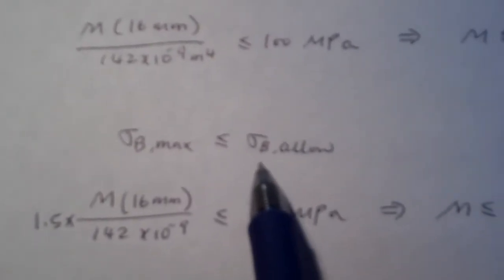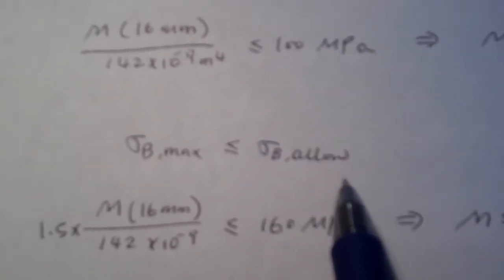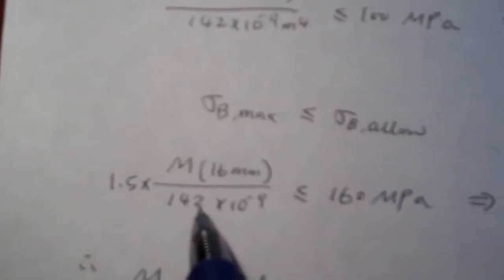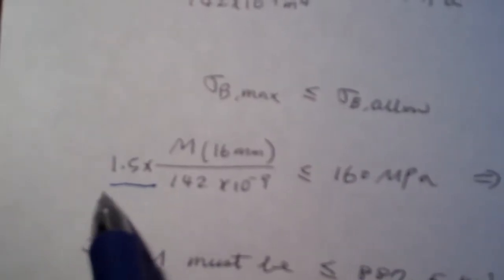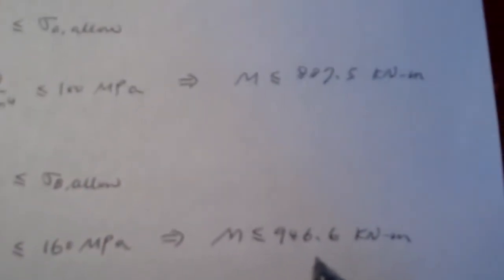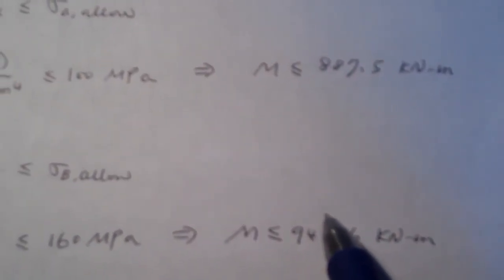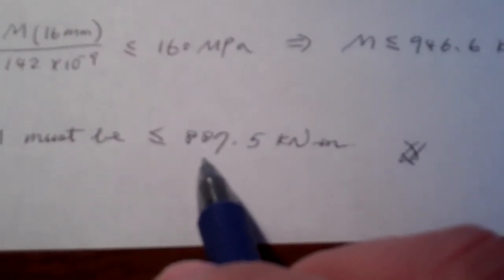The maximum stress in brass, which is calculated by this value, is less than or equal to the allowable stress, which is 160 MPa given. So using this criteria, and don't forget, multiply with this scalar. So we obtain M less than or equal to this number. So we compare the two values, so the moment must be lower than about 887.5.